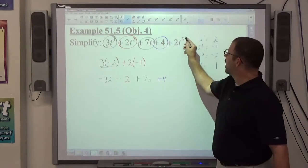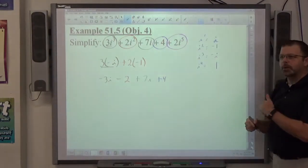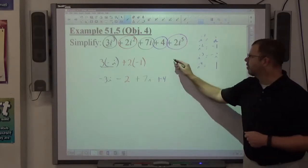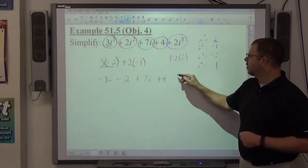Finally, we've got 2i⁵, which is not on our list, but again it's a repeatable list. 1, 2, 3, 4, 5. So i⁵ is the same as i¹. So that's going to be plus 2i.